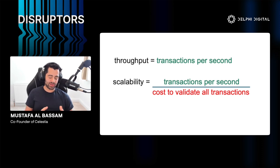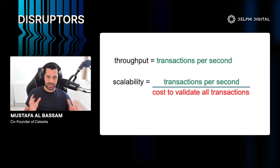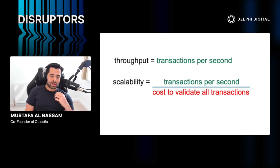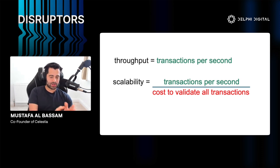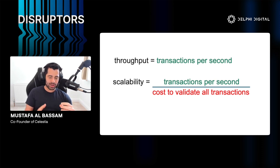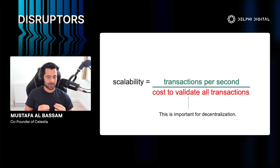Throughput of a blockchain is the transactions per second it can handle, like 1,000 transactions per second. That's also the scalability of any Web2 website — how many users can it handle. But in Web3, scalability is more nuanced. In Web3, scalability is the transactions per second the blockchain can handle, divided by the cost for ordinary users to check that all the transactions in the chain are actually valid.